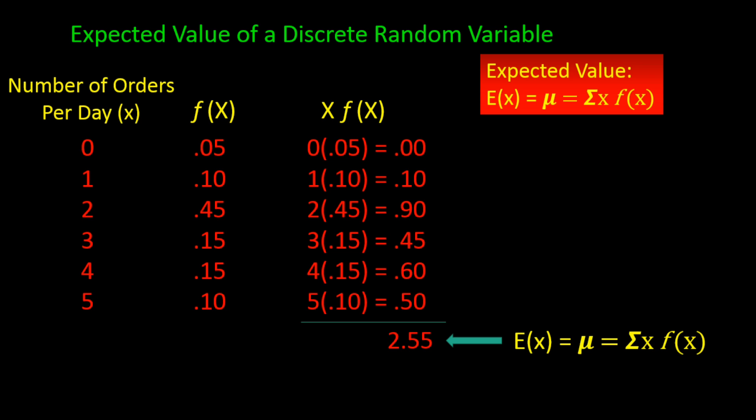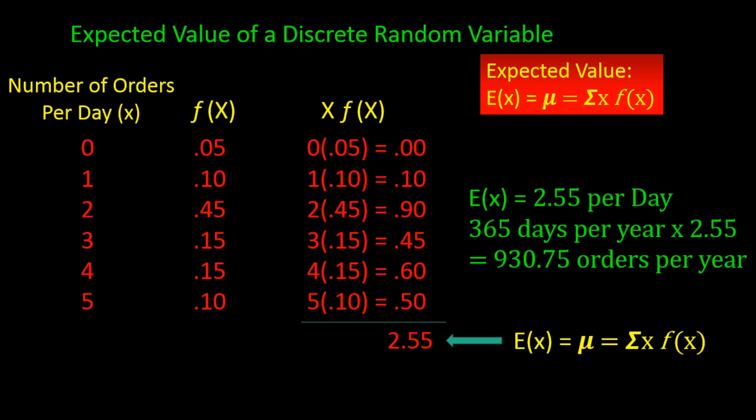So if we're open 365 days a year, we would expect to have 930.75 orders in a given year — that is 365 times 2.55 equals 930.75. So 2.55 is the expected number of orders in a given day, and 930.75 is the expected value of orders in a given year.